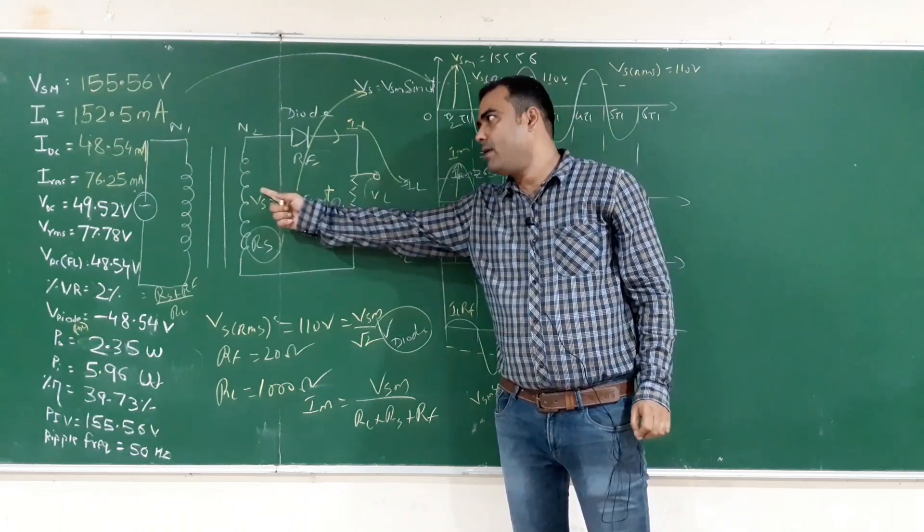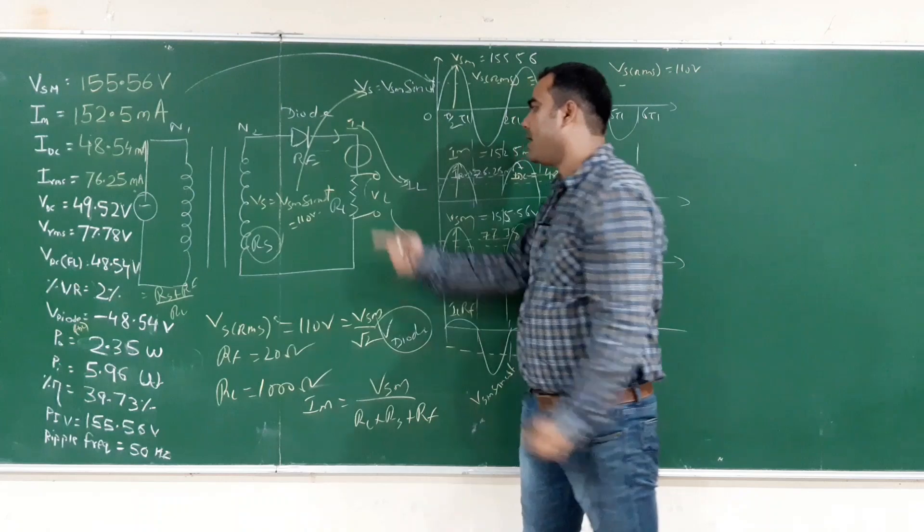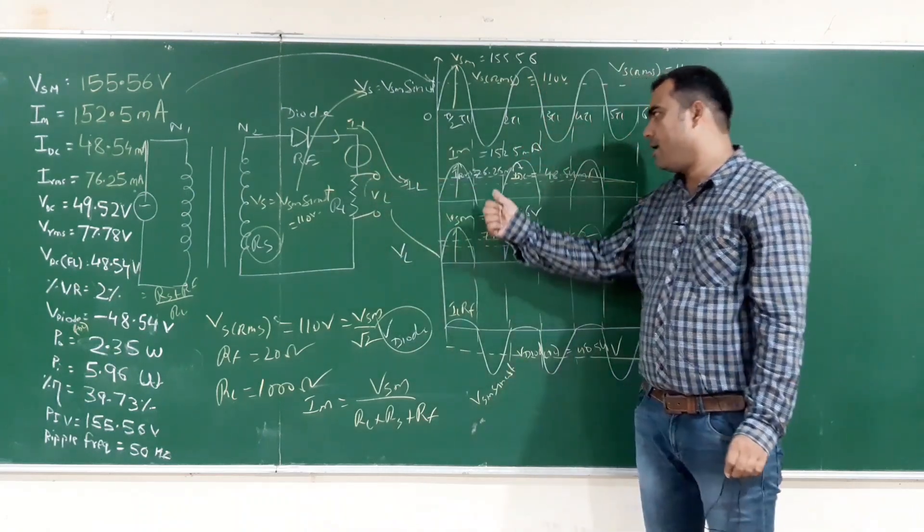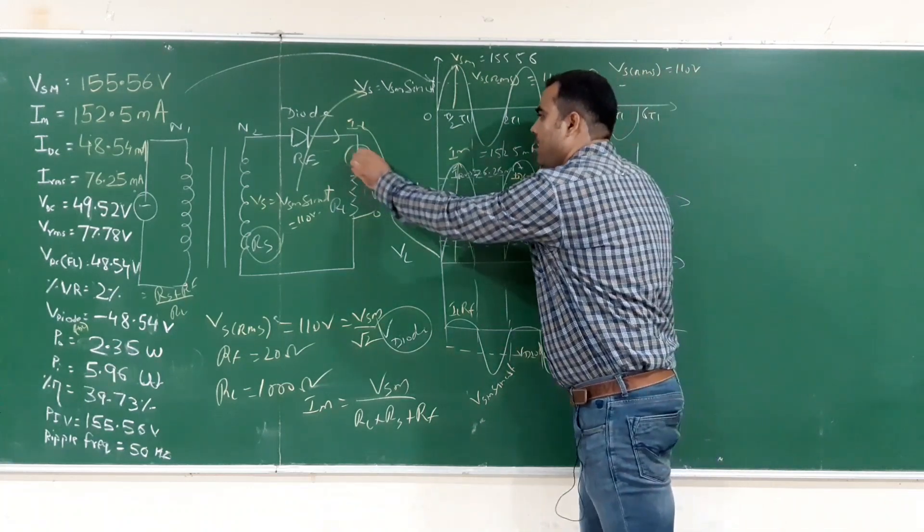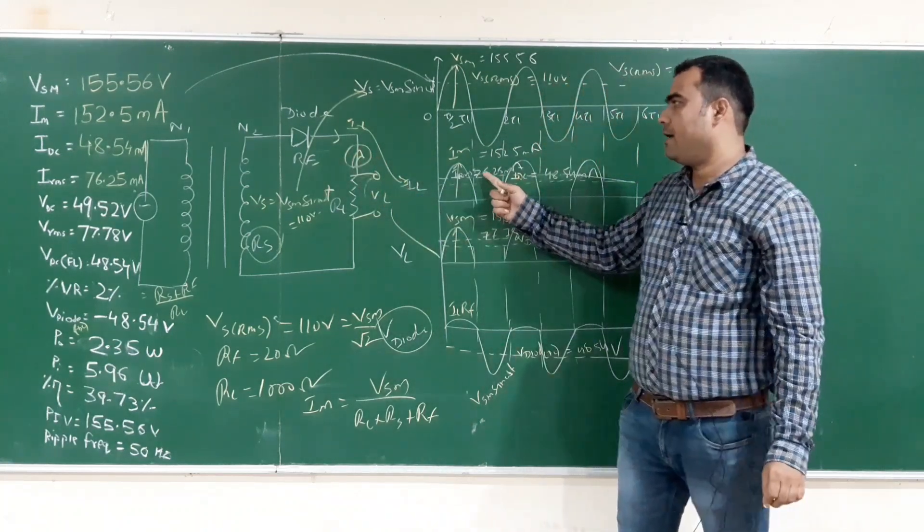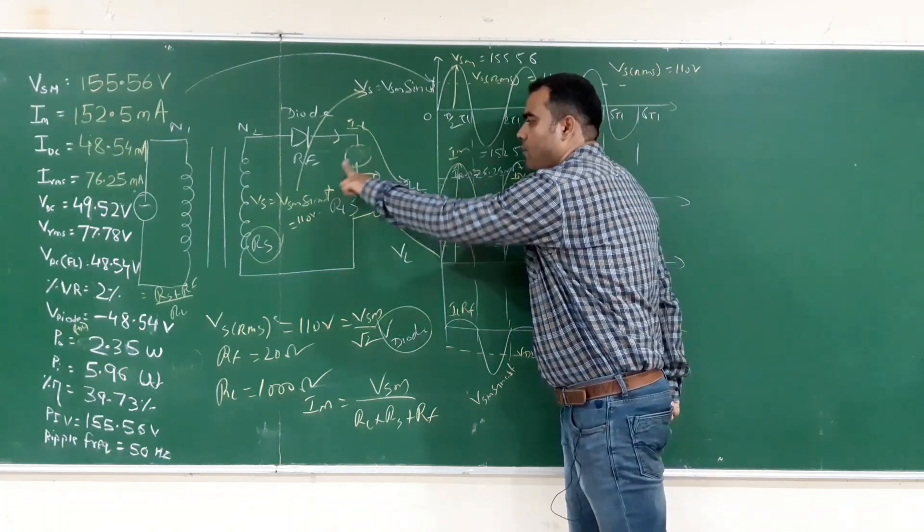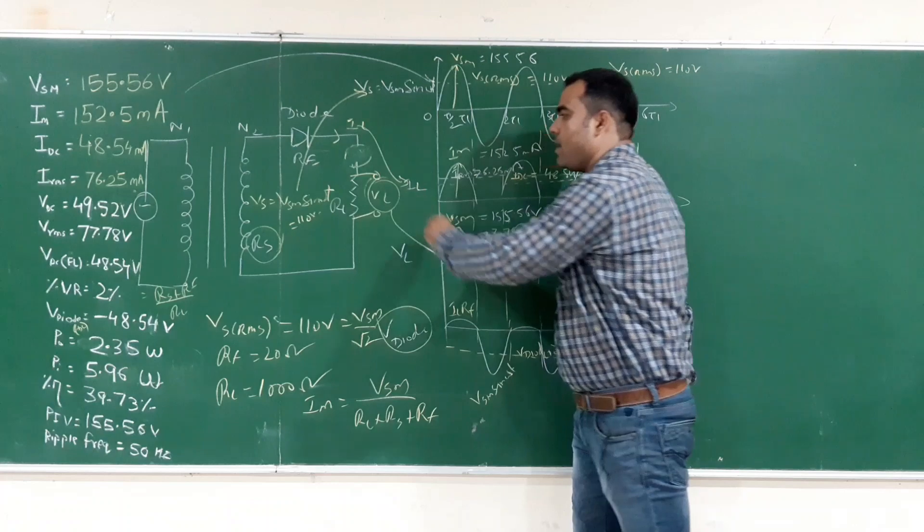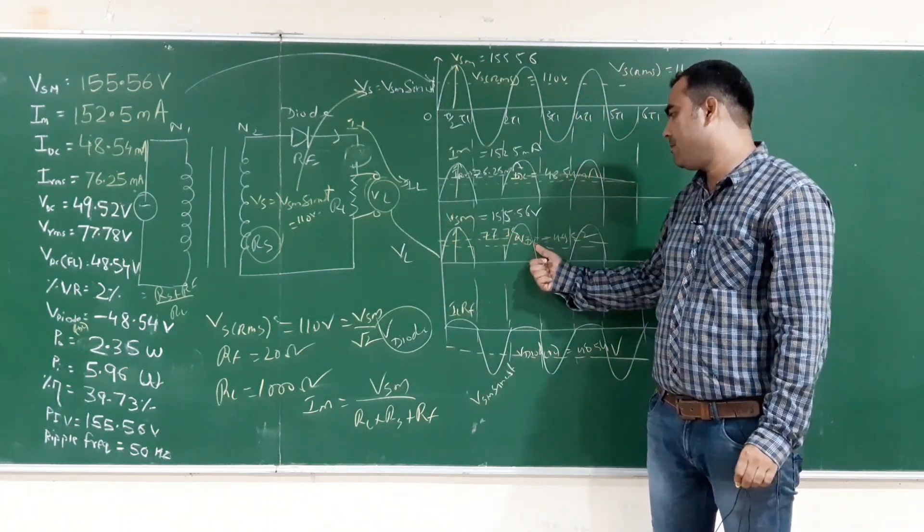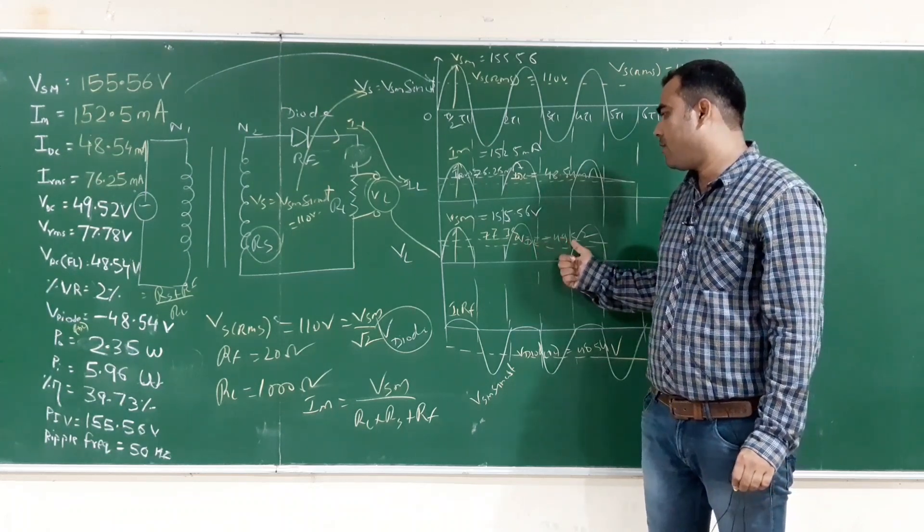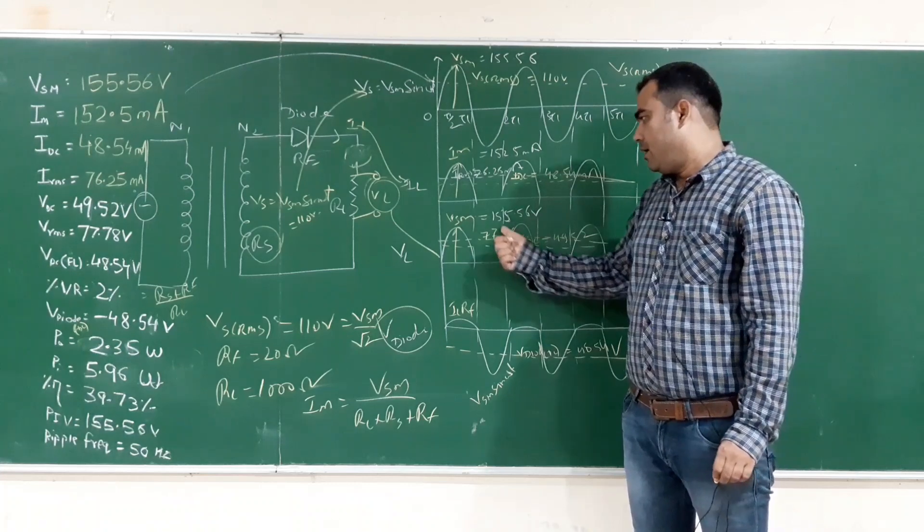If on the secondary side of transformer we are getting 110 volt, and if I connect an AC and DC ammeter here, the ammeter reading will show DC ammeter 48.54 milliampere and AC ammeter IRMS 76.25 milliampere reading. If I connect a voltmeter here and check there, the voltmeter will show VDC and VRMS readings: VDC 49.52 and VRMS is 77.78 volt.